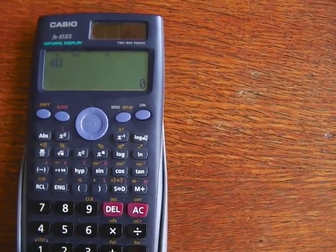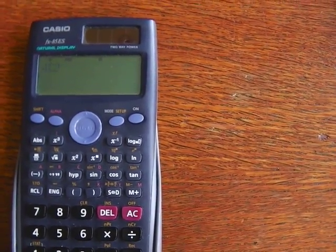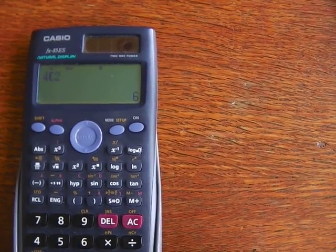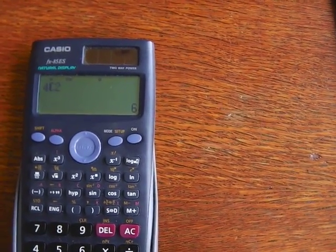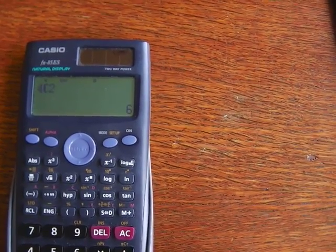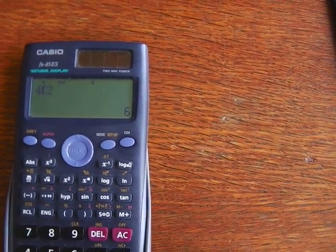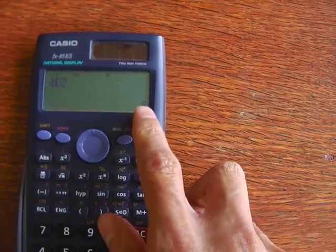And then r is 2, so we press 2 equals. So combination of choosing 2 from 3 where repetitions are allowed, the answer is 6.